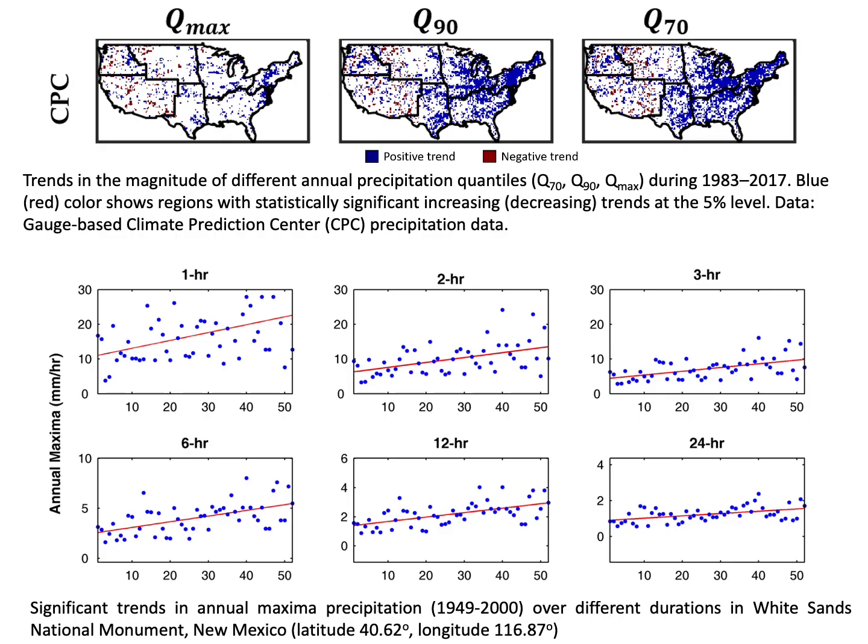Current IDF curves are based on the so-called stationary assumption, which means we assume statistics of extremes remain more or less the same and the past represents the future. But in some parts of the world, extreme precipitation has changed significantly over the past decades, including annual maxima, or extremes above a threshold — the 90th percentile or 70th percentile of precipitation values.